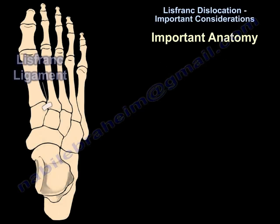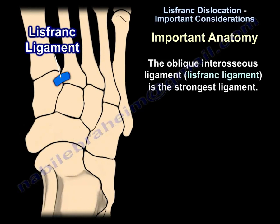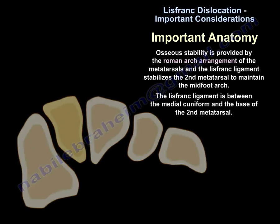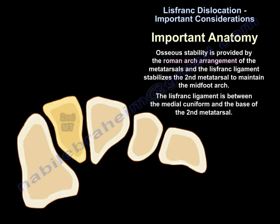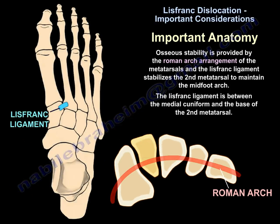Regarding important anatomy: the Lisfranc ligament is the oblique interosseous ligament and is the strongest ligament in the region. The region is stable because the bony architecture is connected to strong ligaments, especially the Lisfranc ligament. Osseous stability is provided by the Roman arch arrangement of the metatarsals, and the Lisfranc ligament stabilizes the second metatarsal to maintain the mid-foot arch. The Lisfranc ligament runs between the medial cuneiform and the base of the second metatarsal.